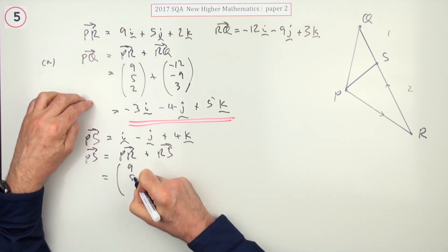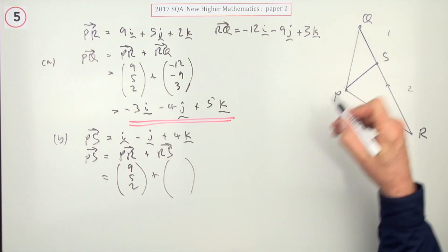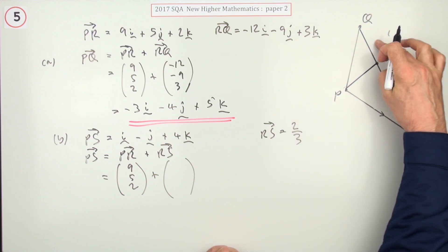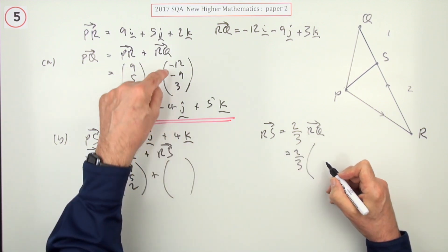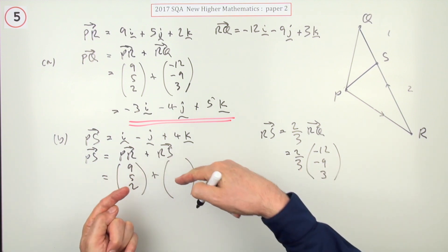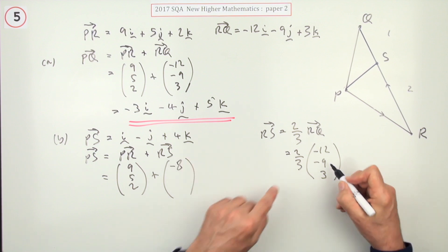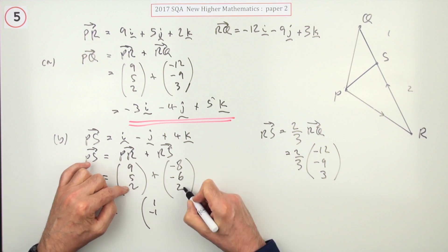I just need to find RS now. RS is two thirds, I'll put a note here, RS is two thirds because it's two steps out of the three. It's two thirds of RQ, so it's two thirds of this one: negative 12, negative 9, 3. I'll just pop them in here, doing the calculation on the way. Three into that goes four, so two fours makes it negative eight. Three into nine goes three times two will make it negative six, and three into three goes one times two makes it two. Adding those together will give you 1, negative 1, 4.